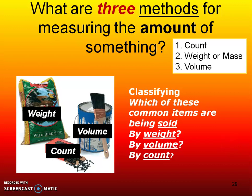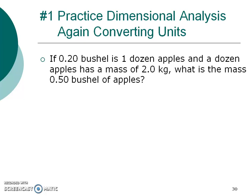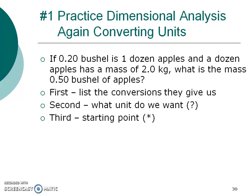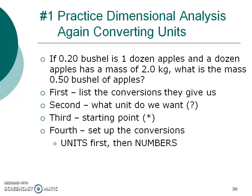First we're going to talk about using dimensional analysis — all we're doing is converting units. For our practice: 0.2 bushels is one dozen, and a dozen of apples has a mass of 2 kilograms. Those are our two conversions. It's asking: what is the mass of 0.5 bushel of apples? First we list the conversions given, figure out the unit we want, establish a starting point, set up the conversions — remembering to deal with units first, then put in the numbers — and finally do the math.